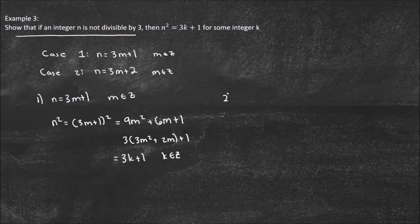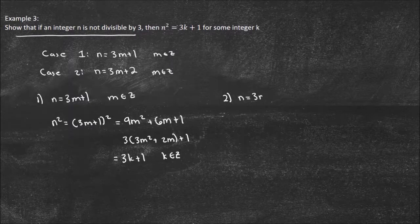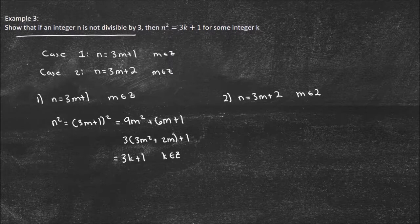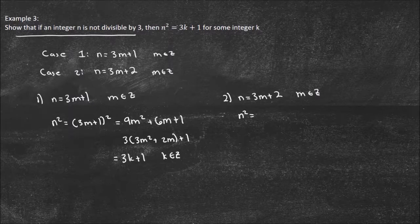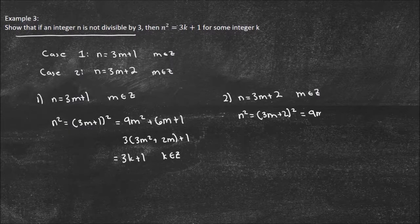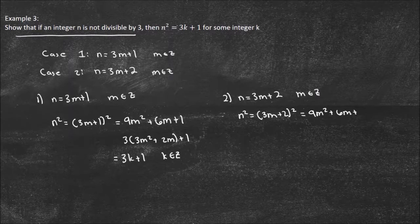Now case 2. So now we have n equals 3m plus 2, where m is an element of Z again. Not an element of 2, it's an element of Z, the integers. Now we get n squared. Well, that's just going to be 3m plus 2, whole thing squared. And that ends up being 9m squared plus 6m plus 4 this time.